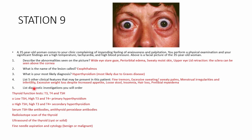Diagnostic investigations: thyroid function tests — T3, T4, and TSH. Low TSH with high T3 and T4 indicates primary hyperthyroidism (problem within the thyroid gland itself). High TSH with high T3 and T4 indicates secondary hyperthyroidism — look for causes outside the thyroid. Also order serum TSH receptor autoantibodies and antithyroid peroxidase antibodies (for Graves' disease), radioisotope thyroid scan, thyroid ultrasound to assess for cysts or solid enlargement, and fine needle aspiration cytology if a goiter is present.